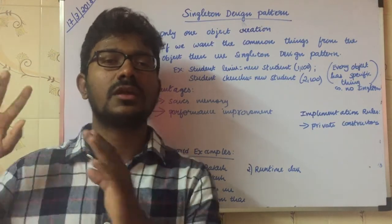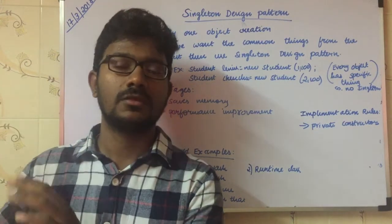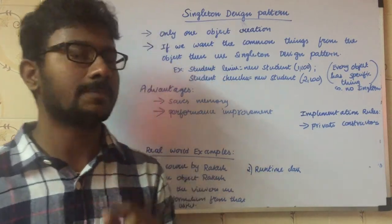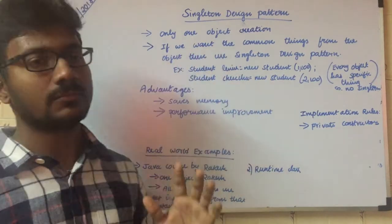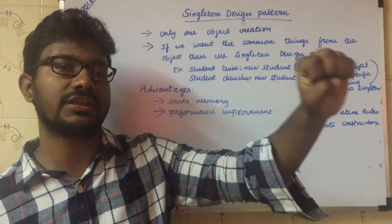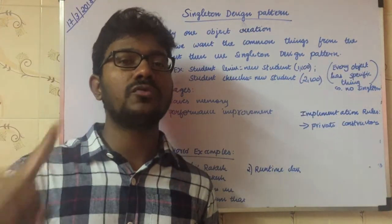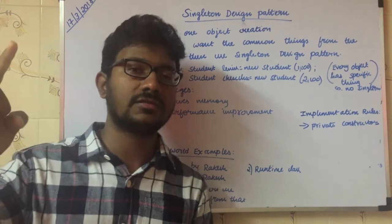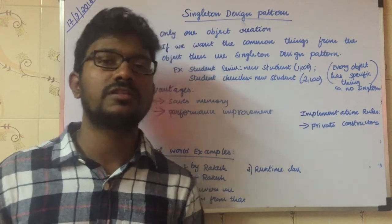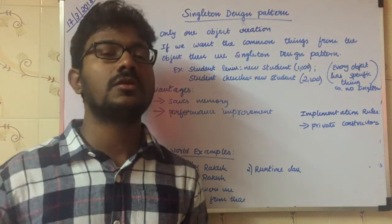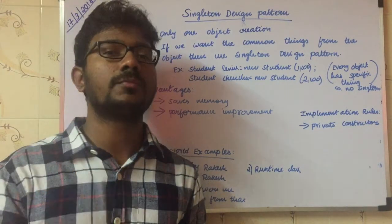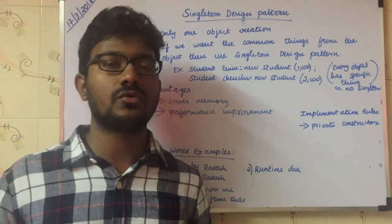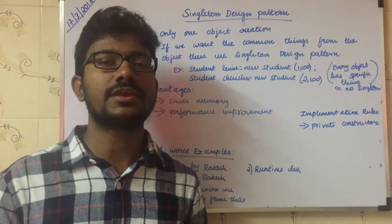First, what is the Singleton pattern? The name itself says it — there is only one thing. Singleton means only one object. Only one object creation is allowed. If you try to create multiple objects for that class, JVM doesn't allow it. JVM allows only one object creation, and that object is reused any number of times — that's the power of Singleton.